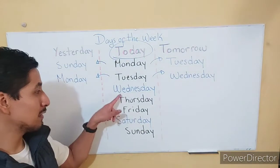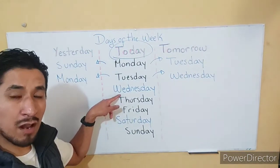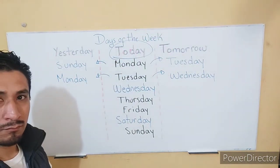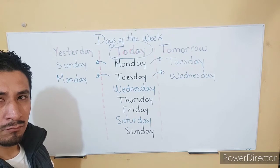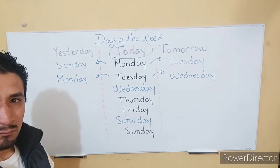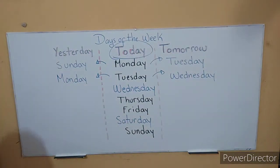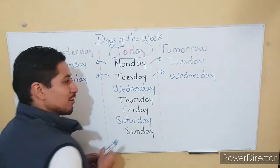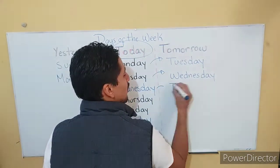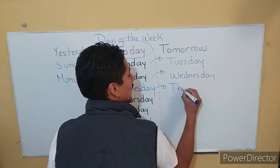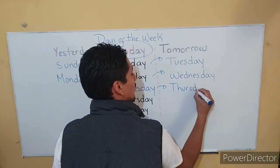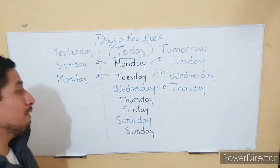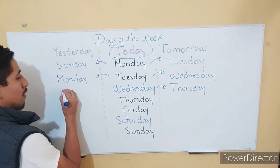¿Qué tal ustedes? ¿Me ayudan con esta? Wednesday. Today — si hoy fuera Wednesday — tomorrow? Very good. Tomorrow will be Thursday. Excellent. And yesterday? Very good. Tuesday. Excelente.